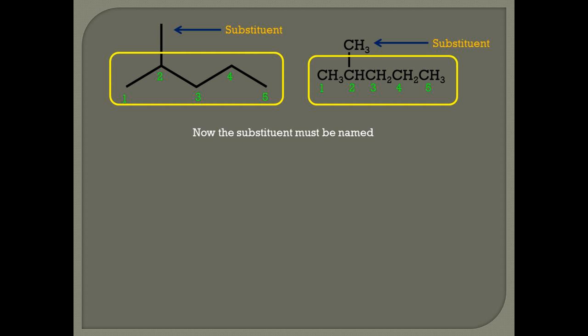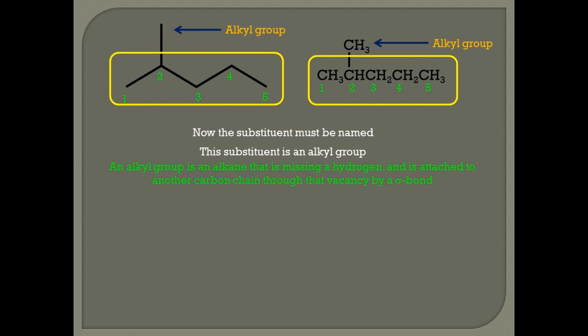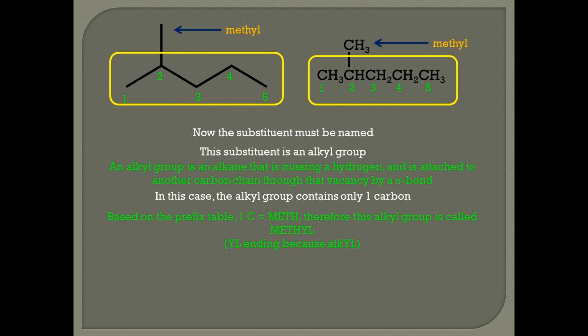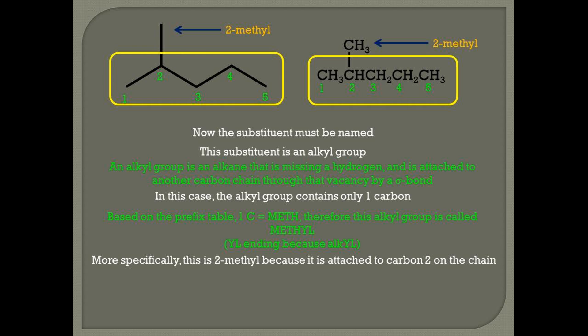Rule four. Now the substituent must be named. This substituent is an alkyl group — an alkyl group is basically an alkane that's missing a hydrogen, and it's attached to another carbon chain through that vacancy by a sigma bond. In this case, the alkyl group contains only one carbon. Based on the prefix table, one carbon is meth, therefore this alkyl group is called methyl. The -yl ending comes from the fact that this is an alkyl group. More specifically, this is 2-methyl because it is attached to carbon two on the chain, with a hyphen between the two and the methyl.